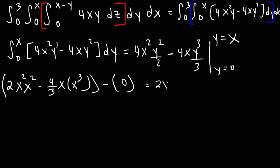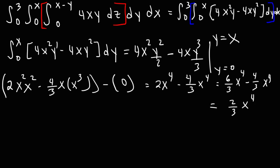These are like terms, so we can combine them. Writing 2 as 6/3, we have 6/3 x to the fourth minus 4/3 x to the fourth. 6 minus 4 is 2, so we get 2/3 x to the fourth. So now we have the integral from 0 to 3 of 2/3 x to the fourth dx.